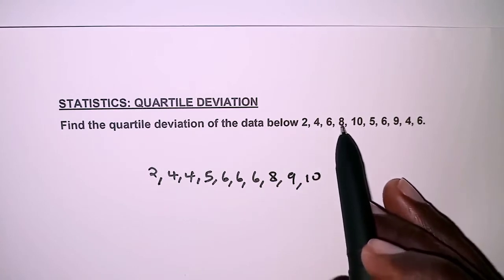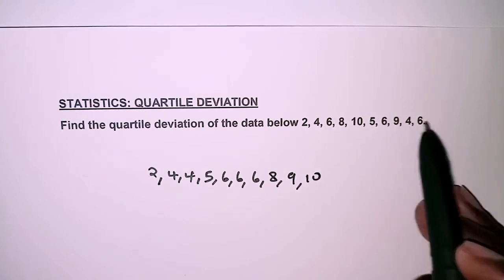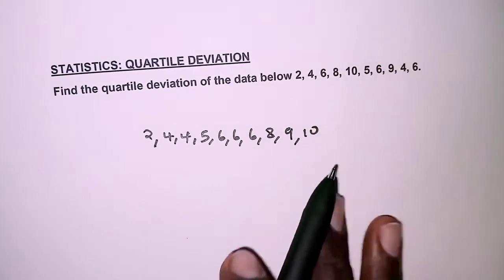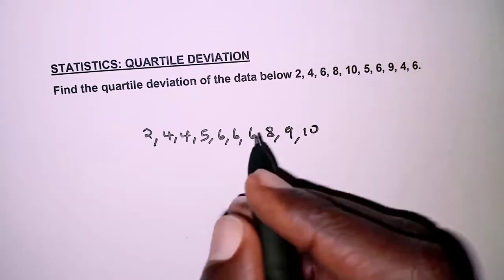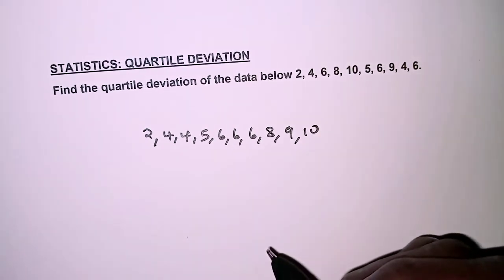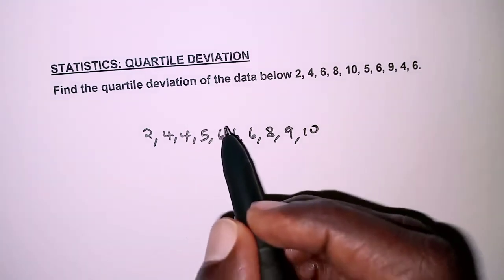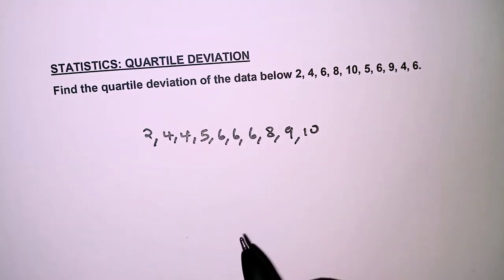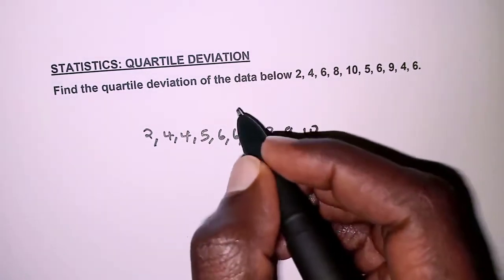So they are 1, 2, 3, 4, 5, 6, 7, 8, 9, 10. There's none missing. From this arrangement we are going to divide the data into halves.